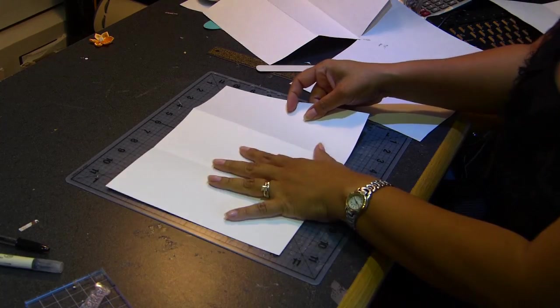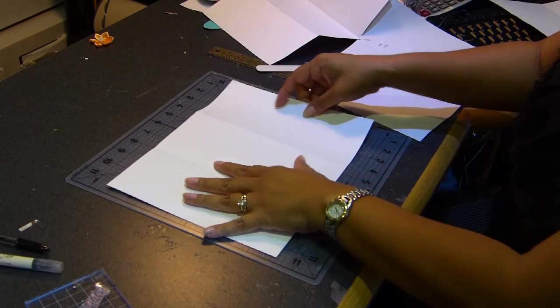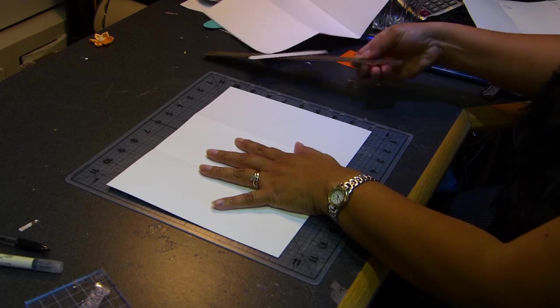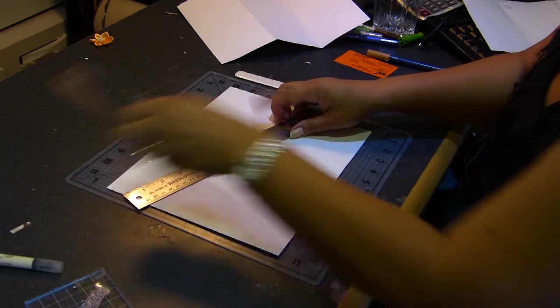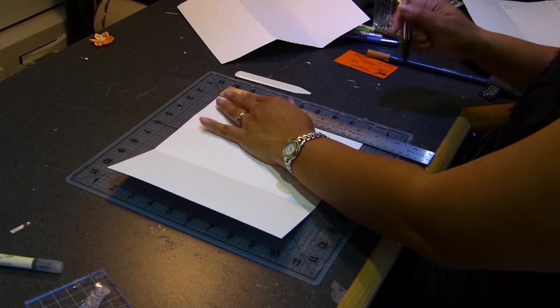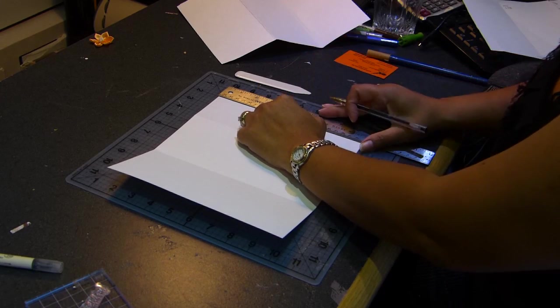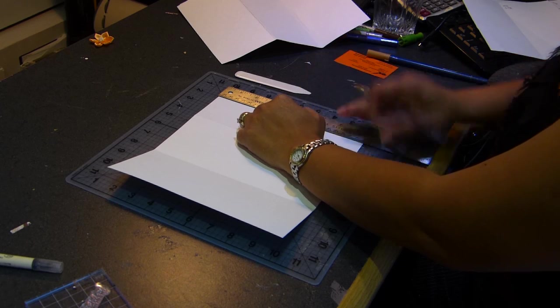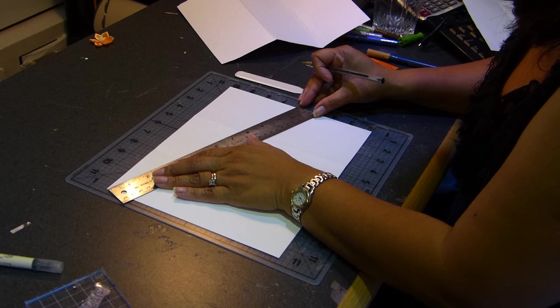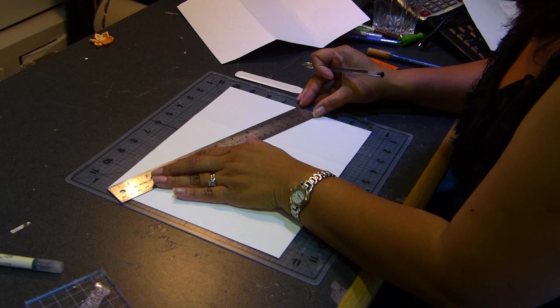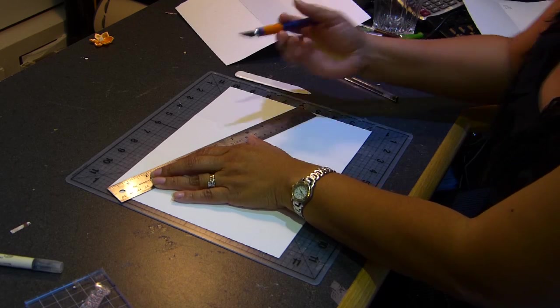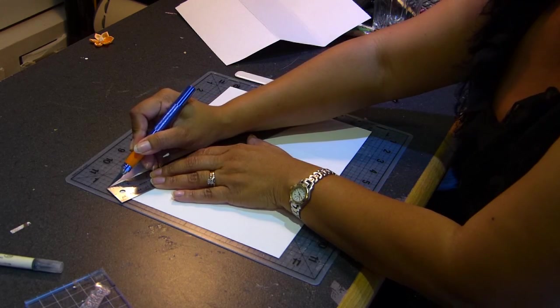The next thing I'm gonna do is grab a ruler and go down from one corner to the other about maybe 4.5 inches. Then I'm gonna put my ruler out this way. You're gonna cut your card as deep as you want using a craft knife, so I'm gonna go ahead and cut it from one edge to the other.